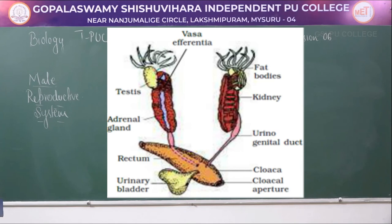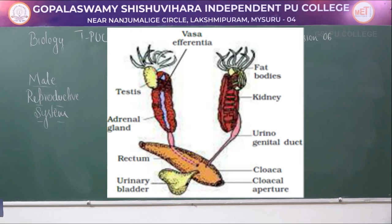The vas deferentia are 10 to 12 in number, arising from the testes and opening into the sides of the kidney. These then open into Bidder's gland, which communicates with the urinogenital duct that comes out of the kidney and opens into the cloaca. The cloaca is a small median chamber which helps in passing fecal matter, urine, and sperms.